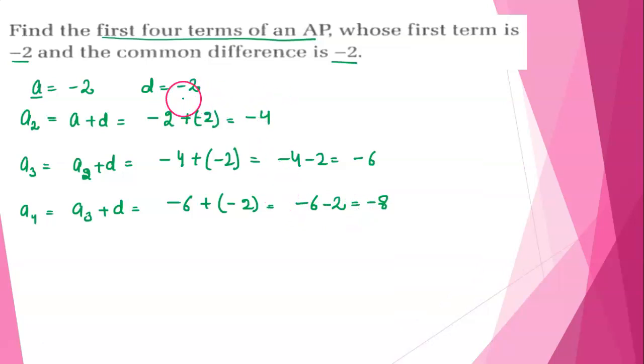So the first term is minus 2, second term is minus 4, third term is minus 6 and the fourth term is minus 8. Thank you very much.